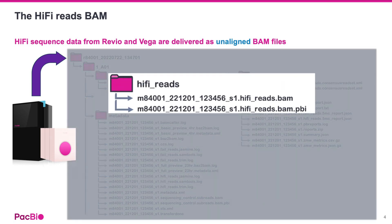The sequences and associated data for HiFi reads can be found in the HiFi reads BAM. The HiFi reads BAM is unaligned, so sequence records do not include a CIGAR string.